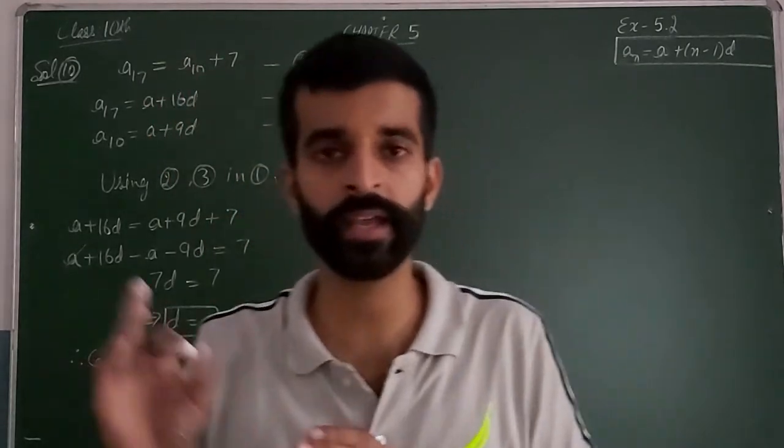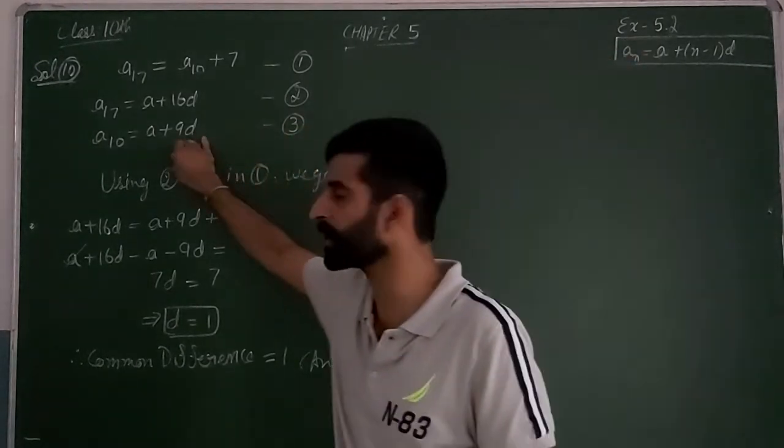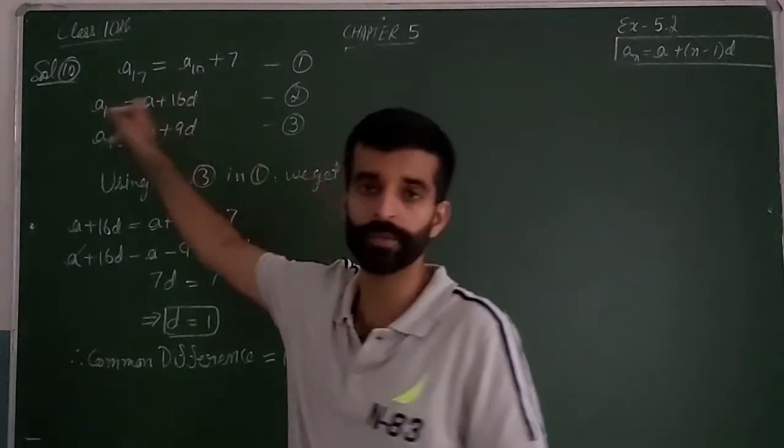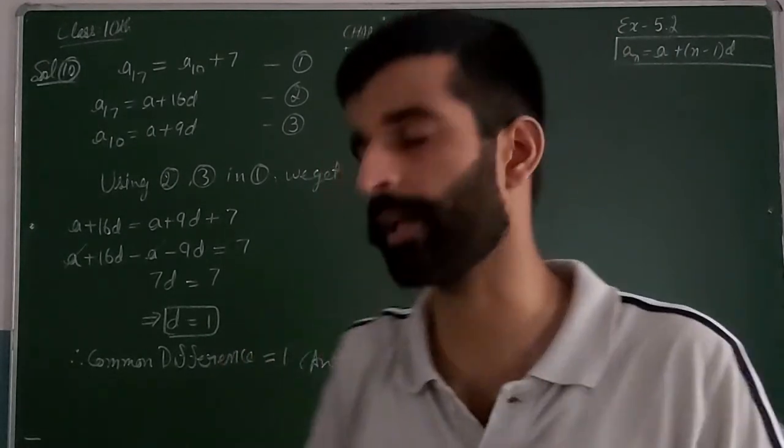So here you have to put the value of A17. You write the value of A17 using this expression. Then from here you will get the common difference that we need to find.